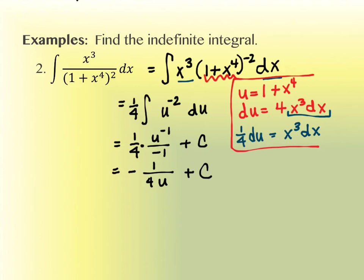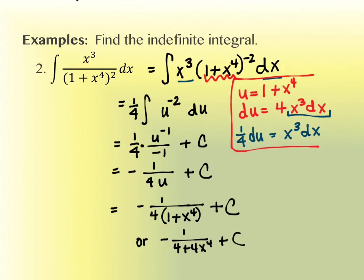It started out in the denominator, so it needs to end in the denominator — no negative exponents. We want it to look in the same form it started in. And it also needs to be in values of x, so we back-substitute: u is 1 plus x to the 4th. So the final answer is negative 1 over 4 times the quantity 1 plus x to the 4th, plus c. You could also multiply through if you'd like, but either form is fine.